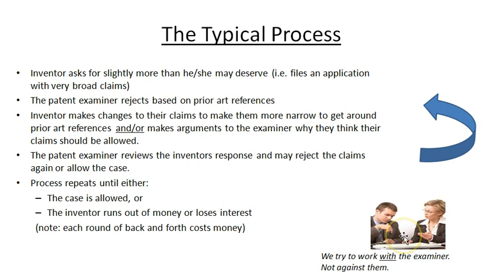In general, we try to work with the examiner. Pretty much everyone I've ever talked to at the patent office — they're good people, they're just doing their job. If you can explain to them clearly why your invention is different from some of the references they found, hopefully in the end they will allow your case and you'll be able to get a fair and good patent issued.